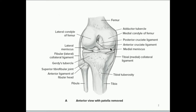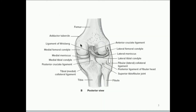We'll go in more detail on those in just a little bit. We can also see some of the other ligaments from the posterior side — again the anterior cruciate ligament, the lateral collateral ligament (this is the right knee joint), the medial collateral ligament, and a pretty good look at the posterior cruciate ligament. On top we have the femur, and then we also have the tibia and the fibula.